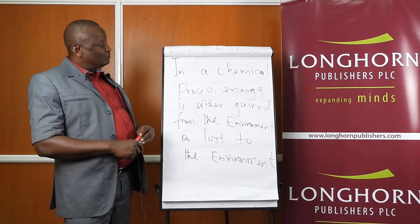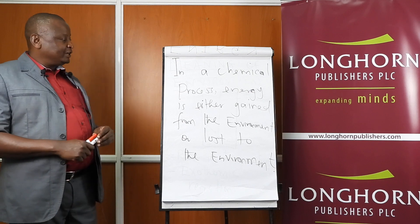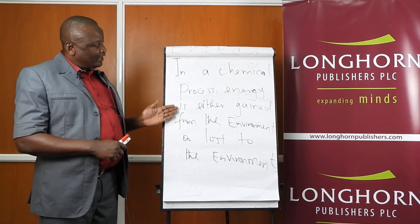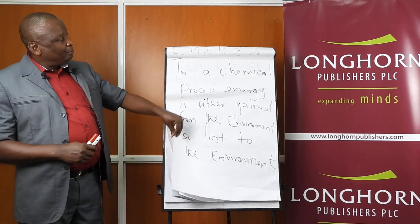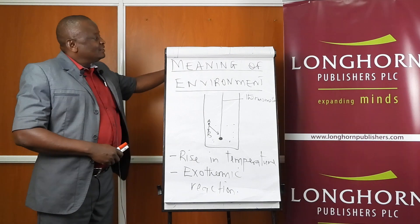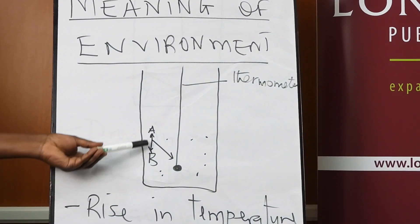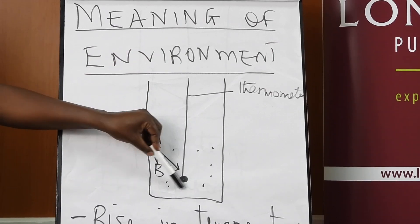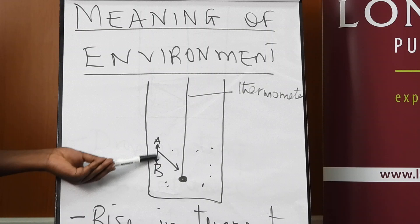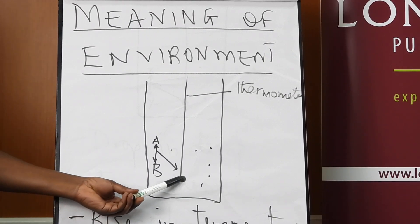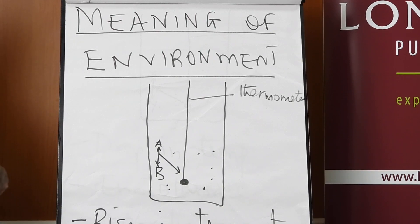In Form One we looked at the differences between physical changes and chemical changes, and we said that during a chemical process energy is either gained from the environment or lost to the environment. If A and B are reactant particles, then the environment is their immediate surrounding where the thermometer has been placed. If energy is being lost from the reaction to the environment, the temperature of the immediate surrounding will rise.